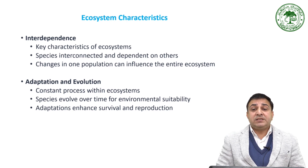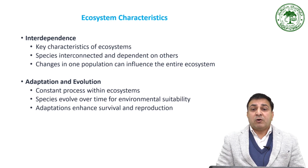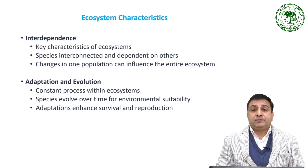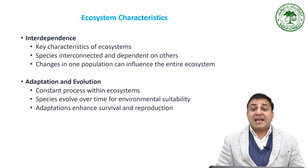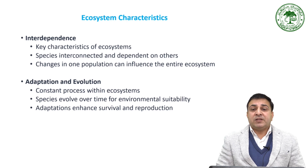Interdependence is a key characteristic of the ecosystem. Each species in an ecosystem is interconnected and dependent on others for various resources like food, shelter, or reproduction. A change in one population can have cascading effects on others, influencing the balance of the entire ecosystem.